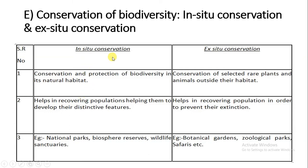Conservation means protection. We are protecting the animals and plants so that biodiversity can be maintained. We are protecting them in their natural habitat where they are already present, which is how we are able to recover populations that may have been reduced. Examples of in-situ conservation are national parks, biosphere reserves, and wildlife sanctuaries.